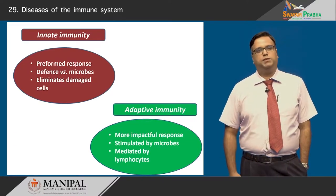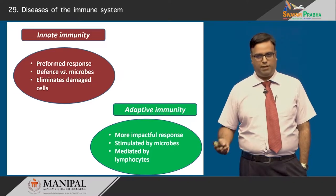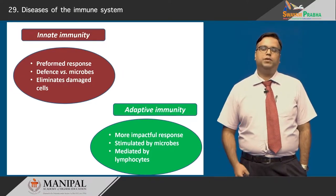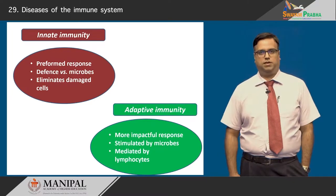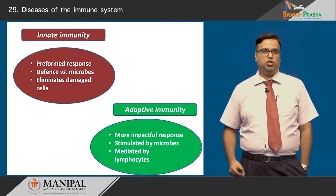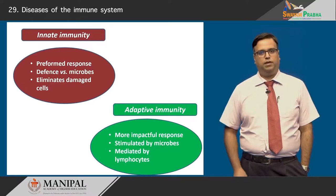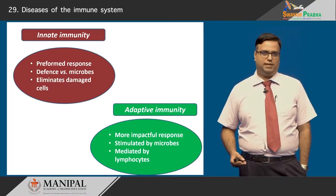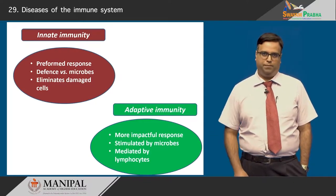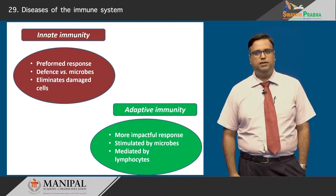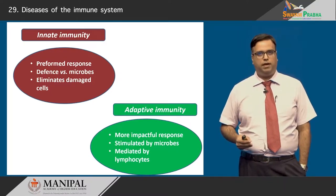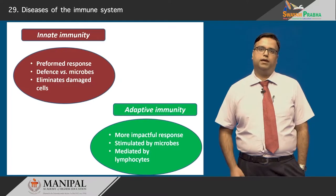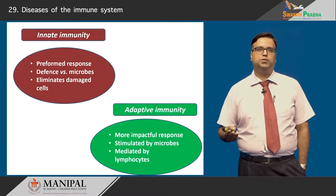If asked as a straw poll what the types of immunity are, the natural answers would be innate and adaptive. Innate immunity is preformed — something we are endowed with and the primary source of defense against microorganisms — but it is short-lived and does not have long-term memory. In contrast, adaptive immunity has a more robust and impactful response. It is stimulated by microorganisms and mediated by lymphocytes. Whenever we refer to immunity in general, adaptive immunity is what we will be speaking of henceforth.